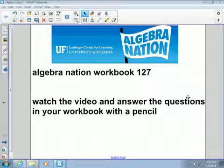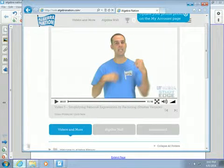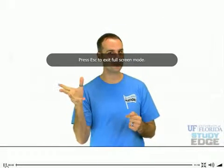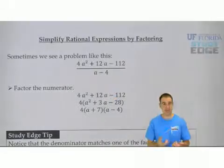This will cover Algebra Nation Workbook page 127. Here we're going to take factoring and rational expressions and put them together. We're going to simplify when we have an expression on the numerator and the denominator, hence called a rational expression, and we need to factor.